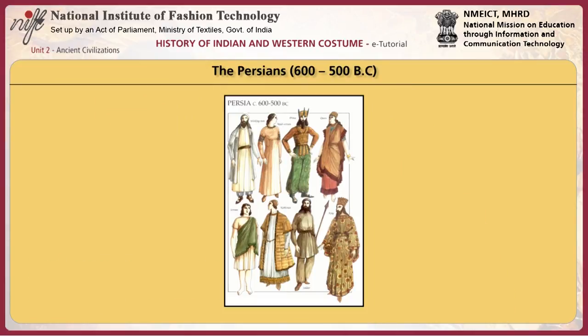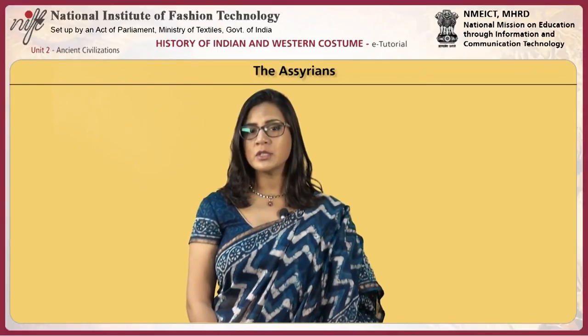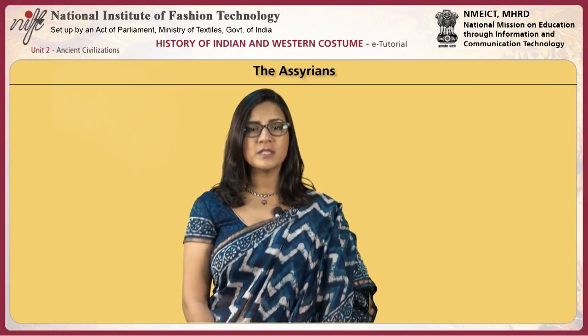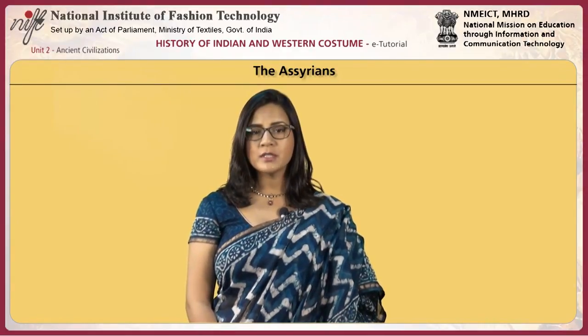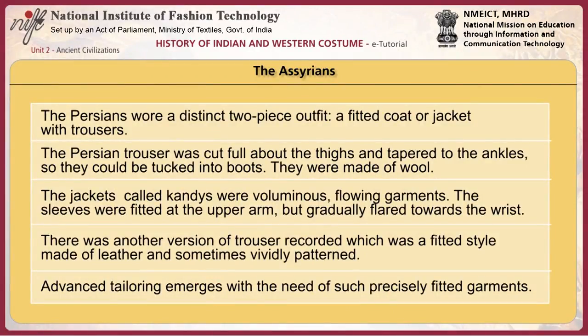We now move on to the Persian civilization. The Persian Empire encompassed Asia Minor in the north to the Arabian Sea in the south, and from Egypt in the west to India in the east. Their subjects ranged from civilized Egyptians, Ionian Greeks and Indus river valleys. Persians governed with more religious and cultural tolerance. The Persians wore a distinct two-piece outfit — a fitted coat or jacket with trousers. The Persian trouser was cut full about the thighs and tapered to the ankles so they could be tucked into boots. They were made of wool.